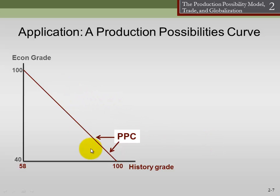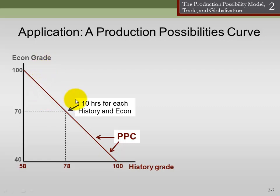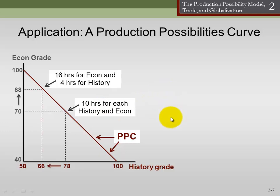How does this demonstrate opportunity cost? Let's say I want to get 100% in econ — I have to be able to accept a 58% in history. What if I want to get a little better grade in history? I would have to accept a little lower grade in econ. So I have this tradeoff. The opportunity cost of getting a higher grade in history is the lower grade I get in econ. We have the point in the middle where we spend 10 hours on each. If we spend a little more time on econ, we get a higher grade in econ but pay for that with a lower grade in history.